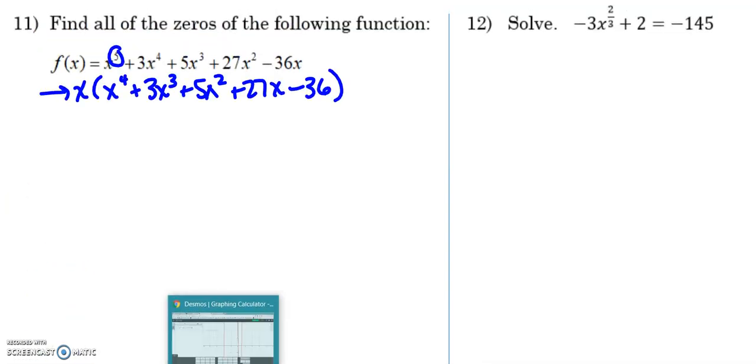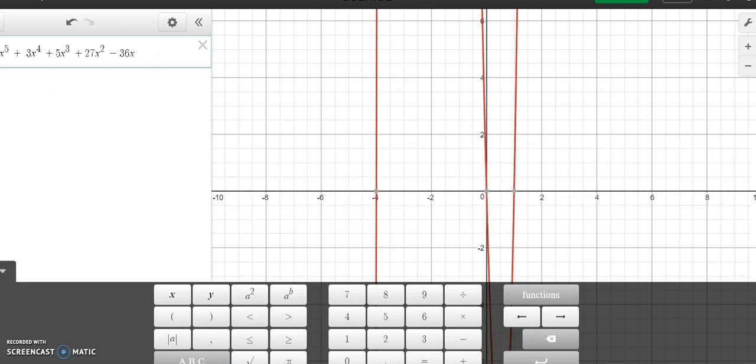And then I'm going to look at my graph. Notice I've graphed the original function. But I want to see where this equation is crossing, where this equation will be crossing the x-axis. So there's the 0 that I just found, which is good. And then I'm going to start some synthetic division by one of the other zeros that I see. So I see a 0 at negative 4, and I also see a 0 at 1.